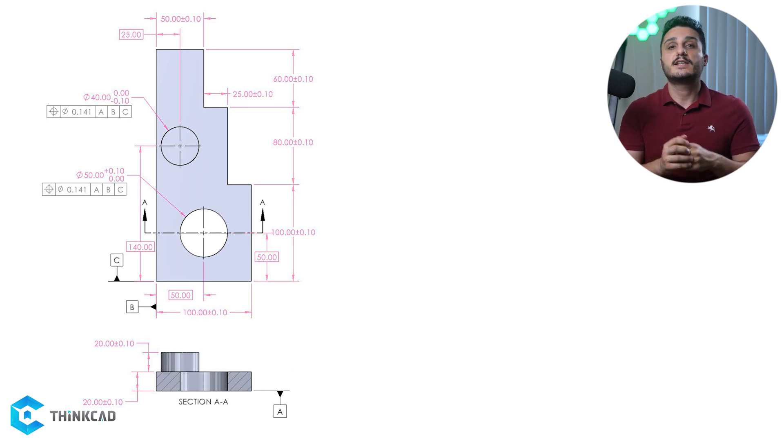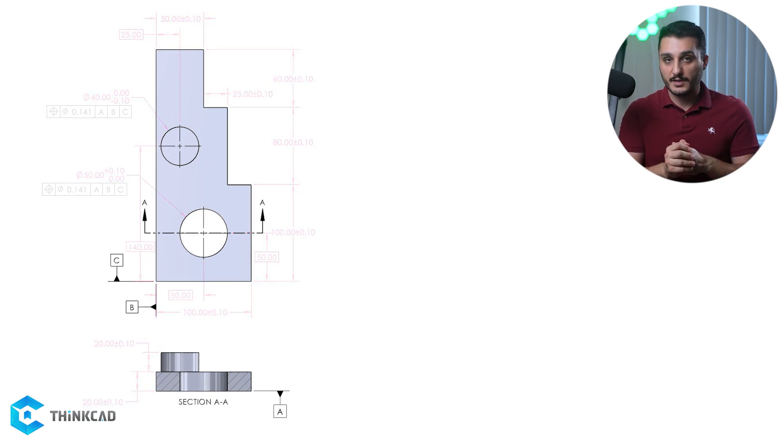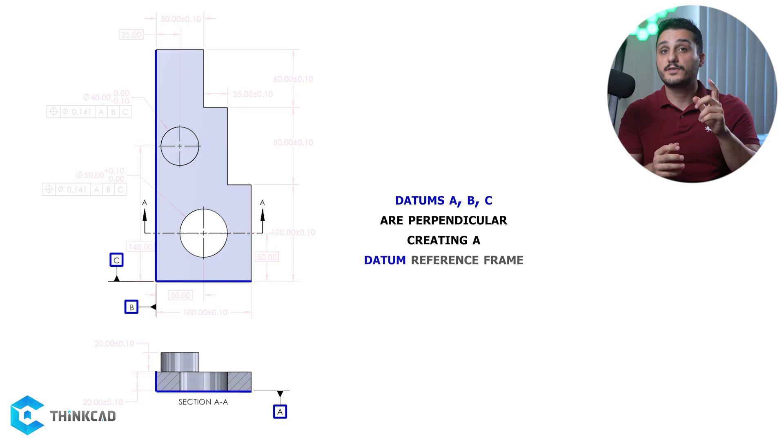First thing you notice is that we have three datums defined here. We have A, B, and C. They are all planar and are pointing to regular features. Also notice that they are all perpendicular to each other. This is very common in GD&T which we covered earlier. These three datums establish your datum reference frame.